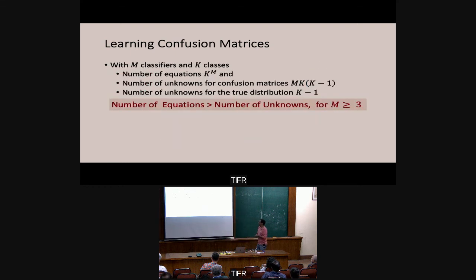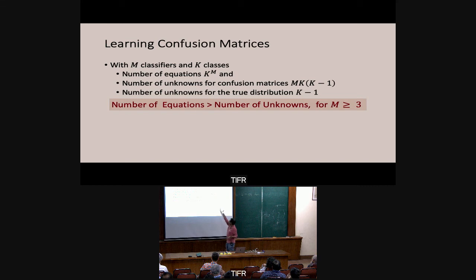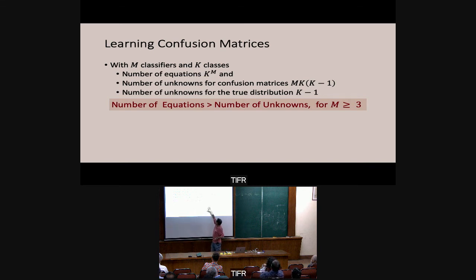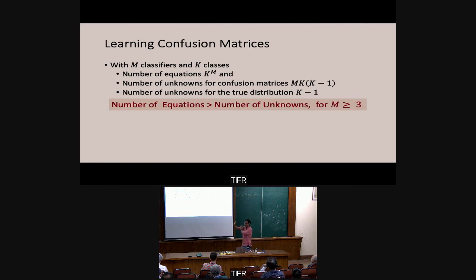Theoretically, with three classifiers and a polynomial solver you could solve these equations. But how to solve them is not clear — and that's where tensor decomposition comes in. An order-M tensor is simply a multidimensional array. A matrix has two coordinates; a tensor has M. The particular tensor we care about is generated using M matrices V1, V2, ..., VM — each a K×K confusion matrix. The order-M rank-K tensor is formed by taking the outer product of corresponding columns and summing over classes.